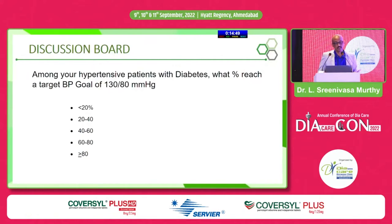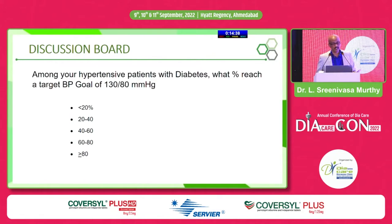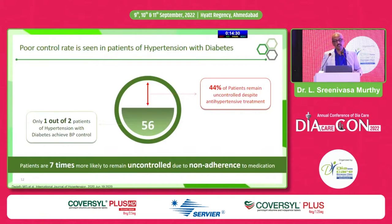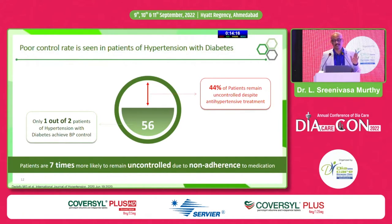A question for the audience: among your hypertensive patients with diabetes, what percentage achieve the target BP of 130/80? In my practice it's about 20–40%. Only about 56% of hypertensive diabetic patients achieve the target — 44% remain uncontrolled despite anti-hypertensive treatment. Patients are seven times more likely to remain uncontrolled due to non-adherence to medication.